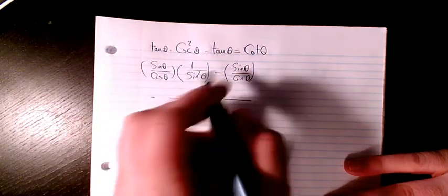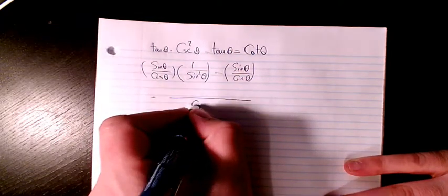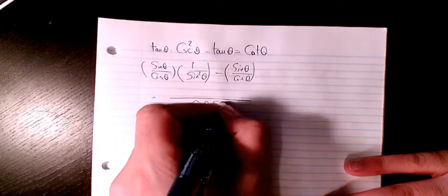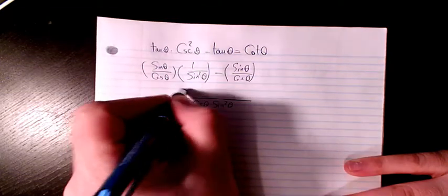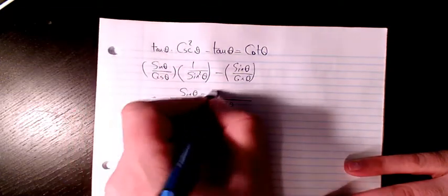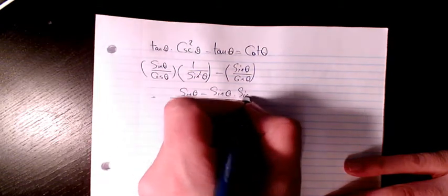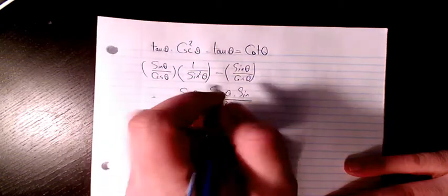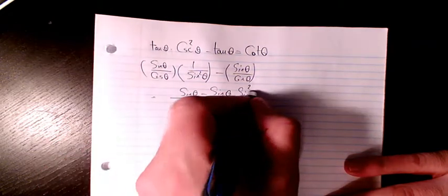Then we have subtraction, but we have two different denominators, so I need to have common denominators. So I have sine theta here, and we have another sine theta, but we need to multiply by sine squared here.